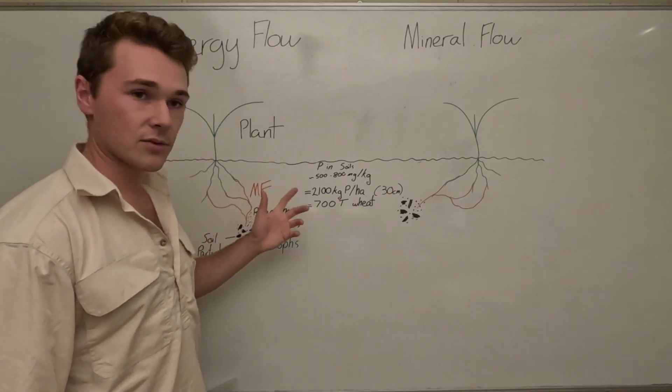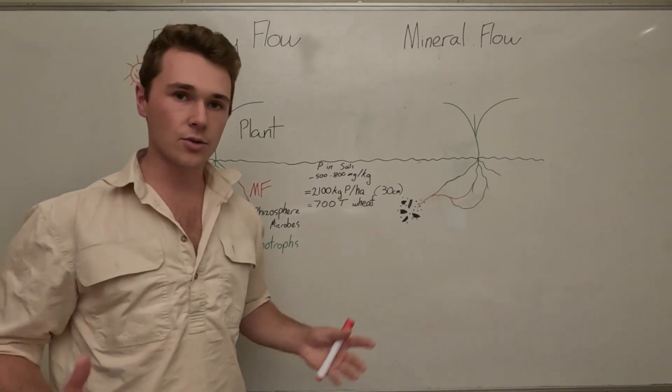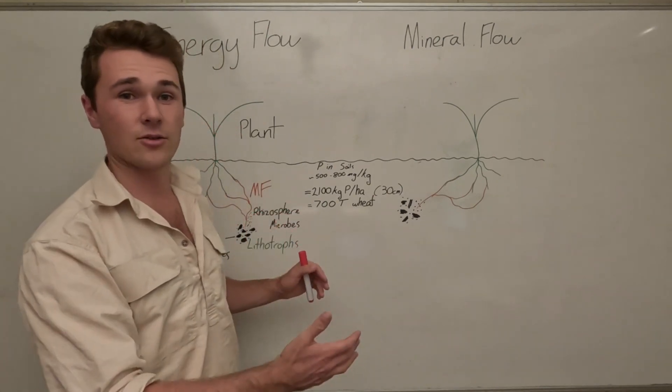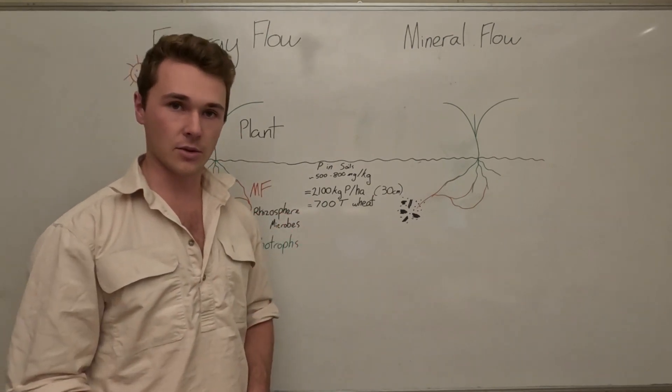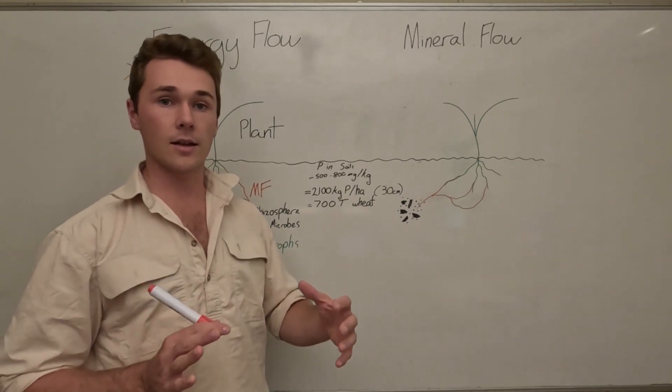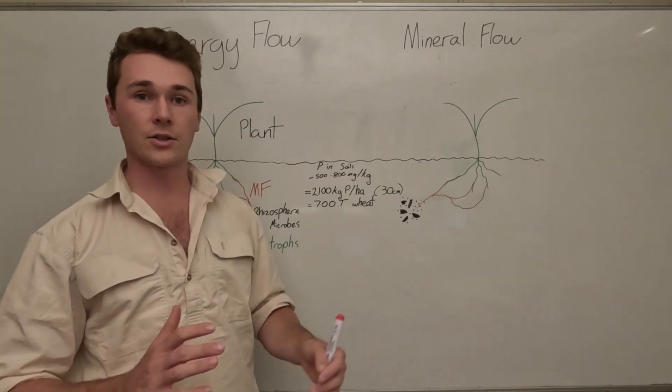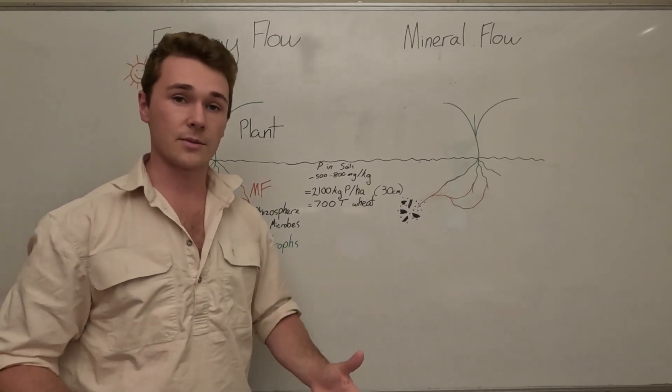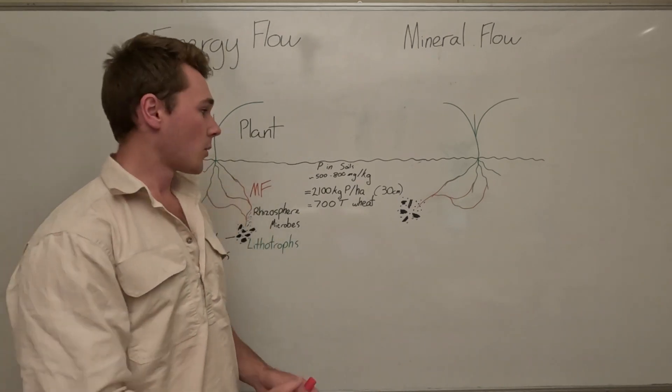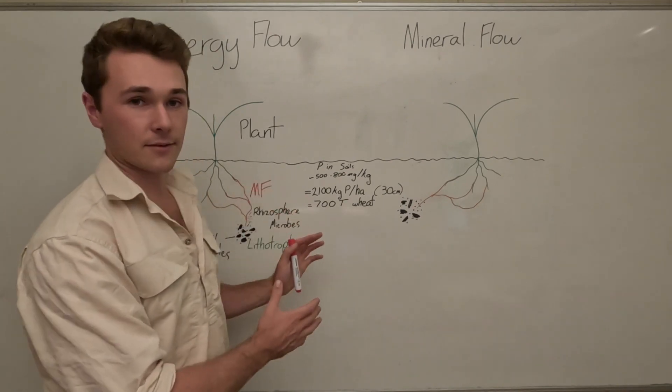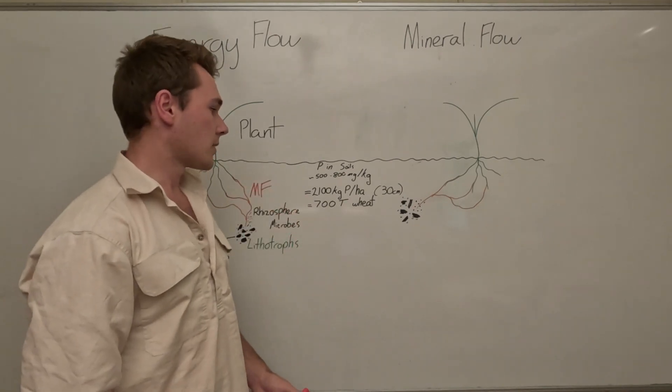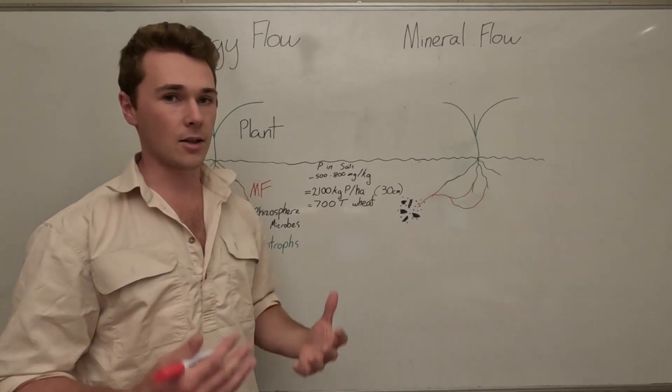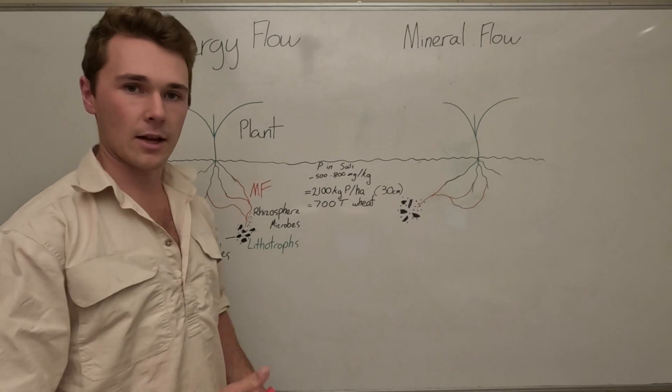If you take phosphorus for example, phosphorus exists in typical soils, most typical soils, between 500 and 800 milligrams per kilo of soil. This is definitely going to vary depending on your soils and the age of your soils and the type of parent material. In Australia for example, we deal with soils with significantly less amounts of phosphorus, so instead of 500 might be 200, 300, a lot less especially when you go over to WA.